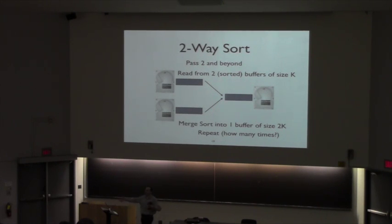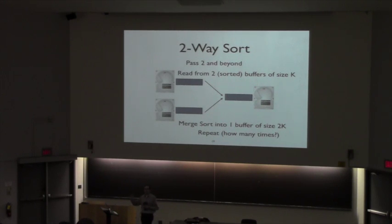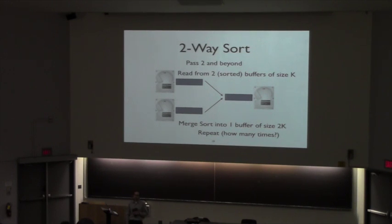Every pass doubles the buffer size. How many times do you need to cycle through this process to sort N pages? Log N — so the total number of passes is log N plus one for the initial sort phase.